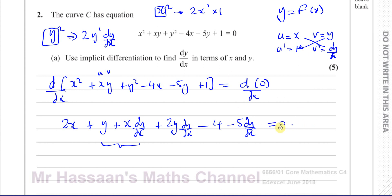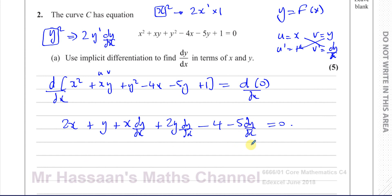So we end up with our differentiated equation. Notice that every time there's a y term being differentiated, you always end up with something times dy/dx. Differentiating y² gives 2y(dy/dx); differentiating −5y gives −5(dy/dx). Now I'll collect all the dy/dx terms on one side: x(dy/dx) + 2y(dy/dx) − 5(dy/dx).